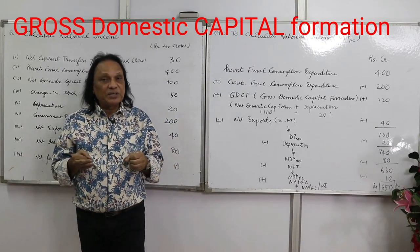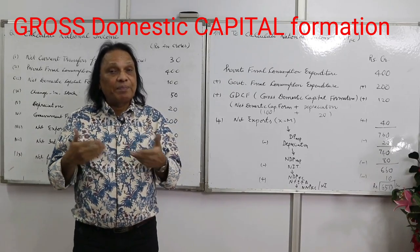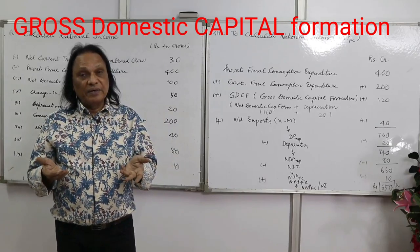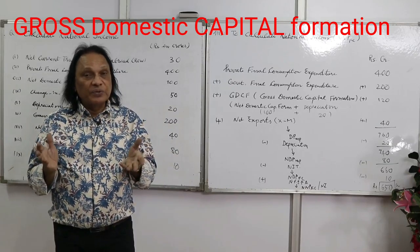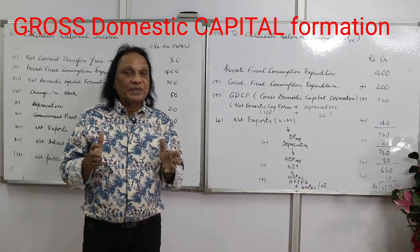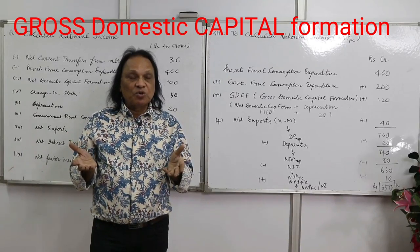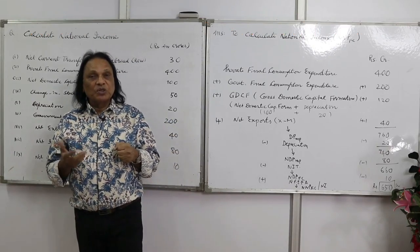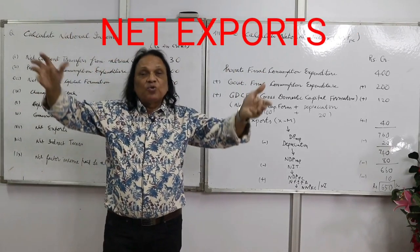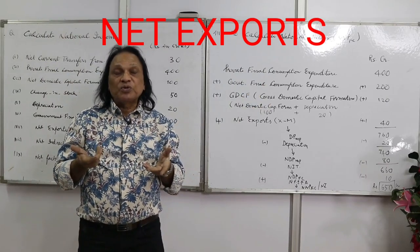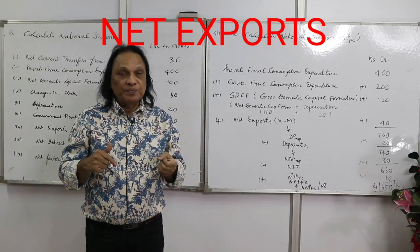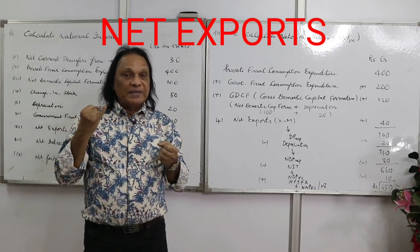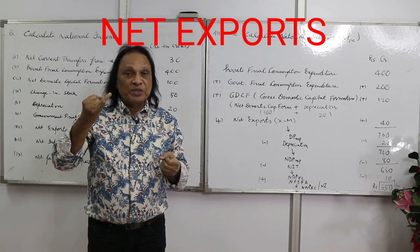The third one is investment expenditure, which we call gross domestic capital formation (GDCF). It has two components: gross domestic fixed capital formation plus change in stock. Change in stock equals closing stock minus opening stock. The last component is net exports.